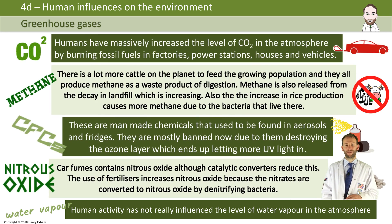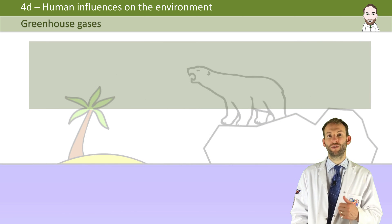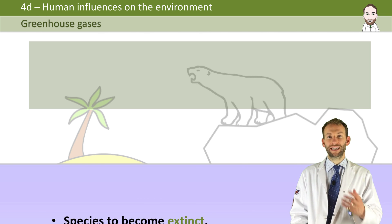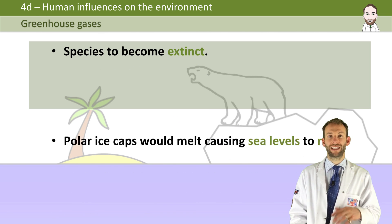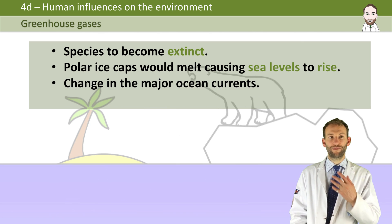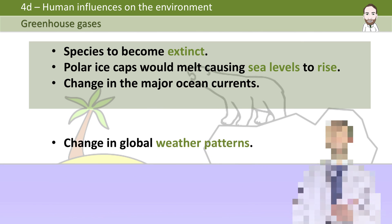If the planet keeps warming up, there will be some serious effects. It would change the nature of many ecosystems, potentially causing species to become completely extinct. Polar ice caps would melt and sea levels would rise, and there would be major changes in ocean currents and global weather patterns.